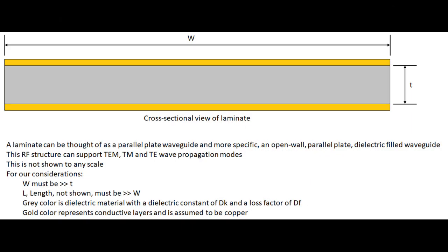Shown here is a simple cross-sectional view of a laminate — copper top and bottom separated by dielectric. In RF terms, this is an open-walled parallel plate waveguide loaded with a dielectric. Based on that, you can understand several different things about the wave properties, where this structure will support a TE wave or a TM wave. However, those wave propagations are normally not desired — they're usually spurious modes. It's more common that the TEM wave or quasi-TEM wave is desired.